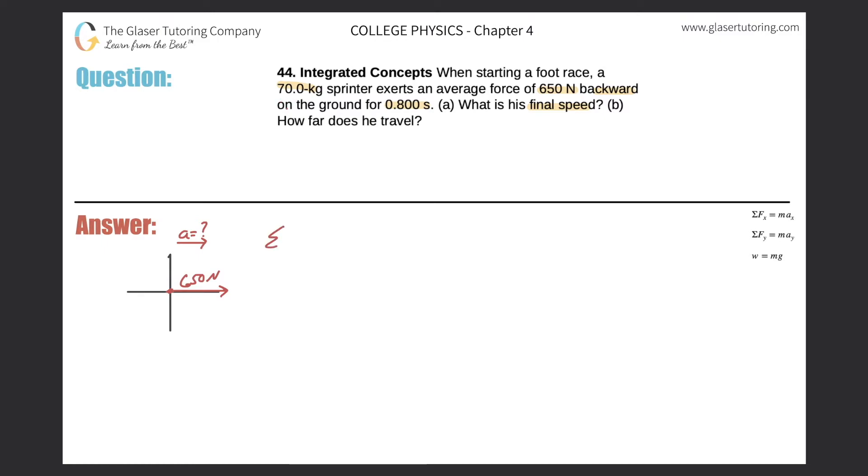So I'm like, oh yeah, if I do sum of the forces in the x direction equals max, and I plug in 650 for the sum of the forces, because that is the only force in the problem. The mass of the sprinter is 70 kilograms. Look what I can do. I can solve for the acceleration.